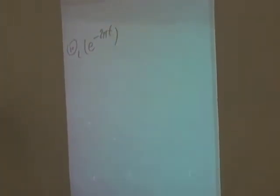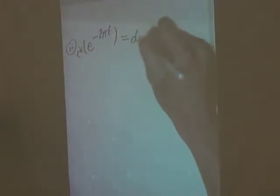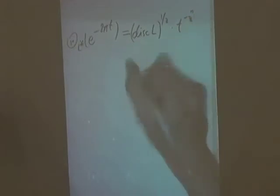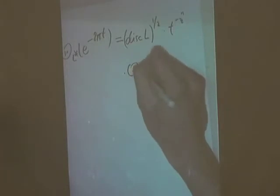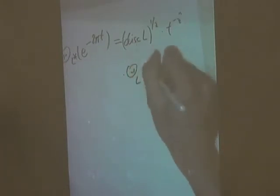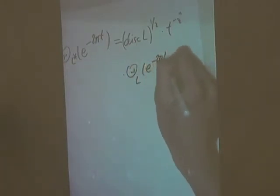Here is the functional equation: θ_{L*}(e^{−2πt}) = (disc L)^{1/2} · (disc L*)^{−1/2} · t^{−n/2} · θ_L(e^{−2π/t}). This makes sense because the dual of the dual lattice is the original lattice.